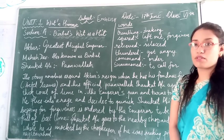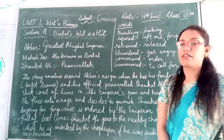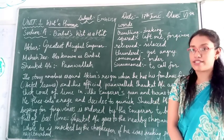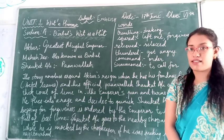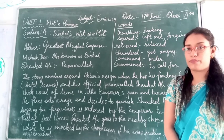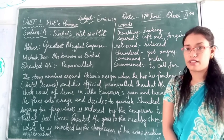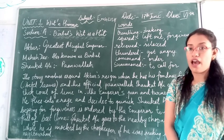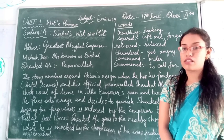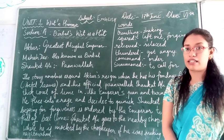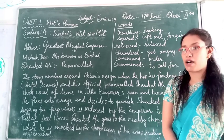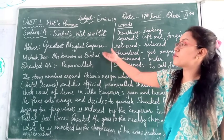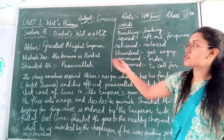Explaining about the chapter, there are three important characters in the story. The first one is Akbar. The second one is Mahesh Das. And the third one is Shaka Tali, who is also a powerful one. You can see that there are three important characters.